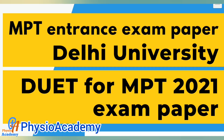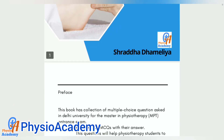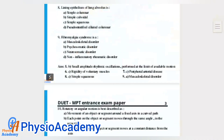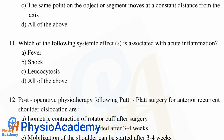MPT entrance exam paper, Delhi University. Question number 11: Which of the following systemic effects is associated with acute inflammation? Option A: fever. Option B: shock. Option C: leukocytosis. Option D: all of the above. The correct answer is option D, all of the above.